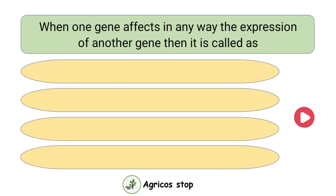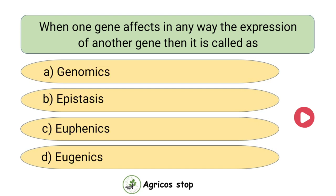When one gene affects in any way the expression of another gene, then it is called as? Options are genomics, epistasis, euphenics, and eugenics. The answer is epistasis. When one gene affects in any way the expression of another gene, then it is called as epistasis.